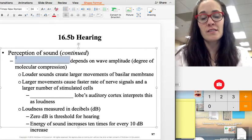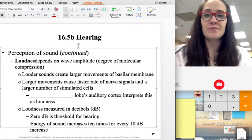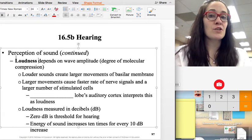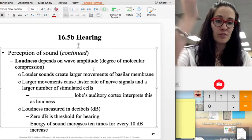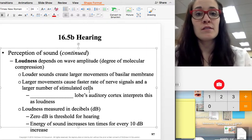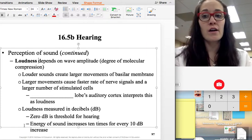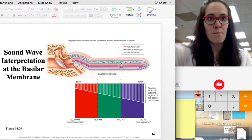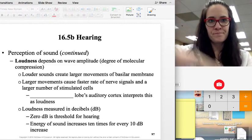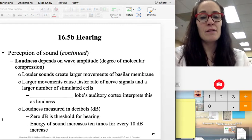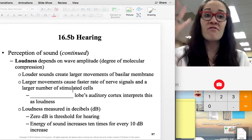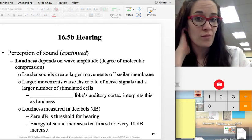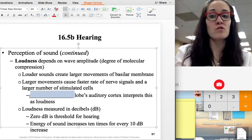And it depends on the degree of compression of the molecules or the amplitude of the waves. So louder sounds are going to cause this basilar membrane to move even more. Louder sounds create faster nerve signals as well. More cells will be stimulated.